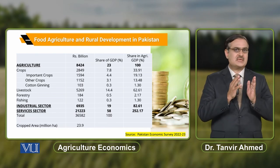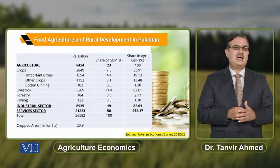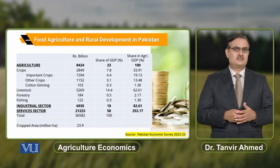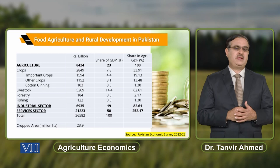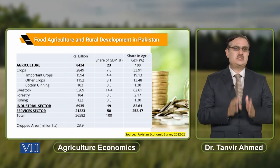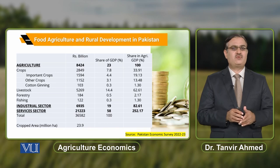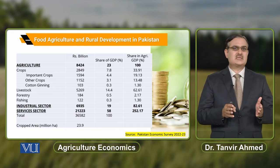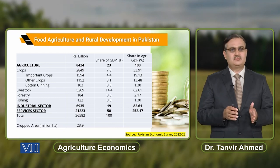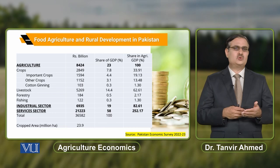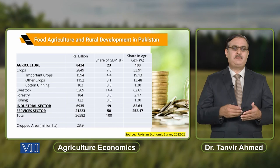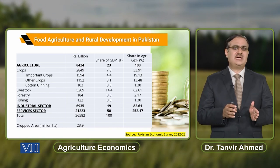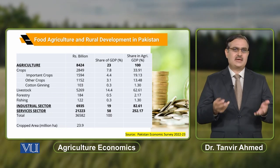اگر ہم agricultural sector کی GDP میں contribution کا break-up کریں across different sub-sectors، تو جو 23% contribution ہوئی تھی GDP میں from the agricultural sector، اس میں سے approximately 34% contribution آئی تھی from the crop sector، اور around 63% contribution آئی تھی from the livestock sector. تو ہم کہہ سکتے ہیں livestock sector has almost double contribution with reference to the crop sector. Forest اور fishing کا share agricultural GDP میں بڑا minor تھا.